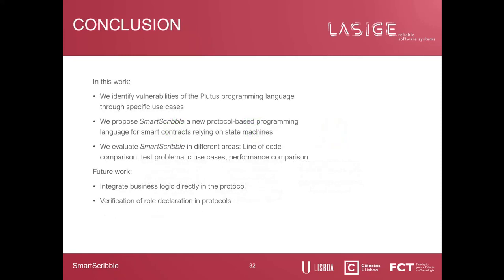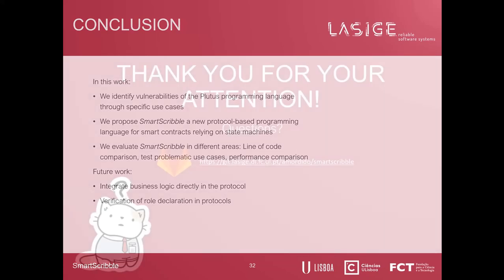In this work, we identified vulnerabilities of the Plutus programming language using specific use cases. We proposed a new programming language — SmartScribble — to fix some of the problems we found with Plutus, which uses protocols to generate state machines to then verify the interactions and identify which ones are out of order. We made an evaluation to the best of our abilities regarding lines of code, comparison, and testing of problematic use cases. Regarding future work, we wish to integrate business logic directly into the protocol, and also verify rule declarations within protocols, which is not currently being enforced by the programming language.